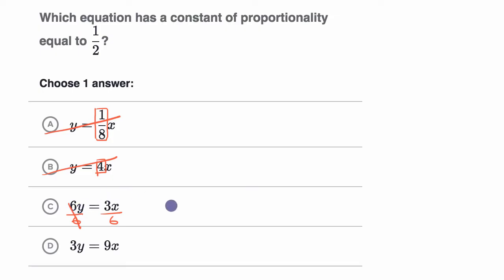So we're gonna get y equals 3 sixths times x. Well, 3 sixths is the same thing as 1 half times x. And so there you have it. We have a constant of proportionality of 1 half. That's the choice I like.